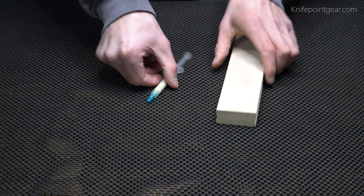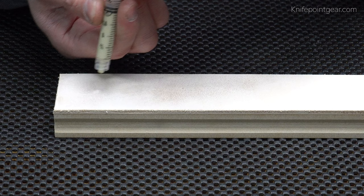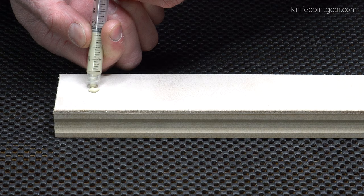So the first thing you want to do is, of course, apply the diamond compound to the strop. Now you need to be careful doing this because this has a tendency to come out all at once. So the best way that I figured out how to do this is to put the tip directly down into the strop surface and squeeze gently just like that.